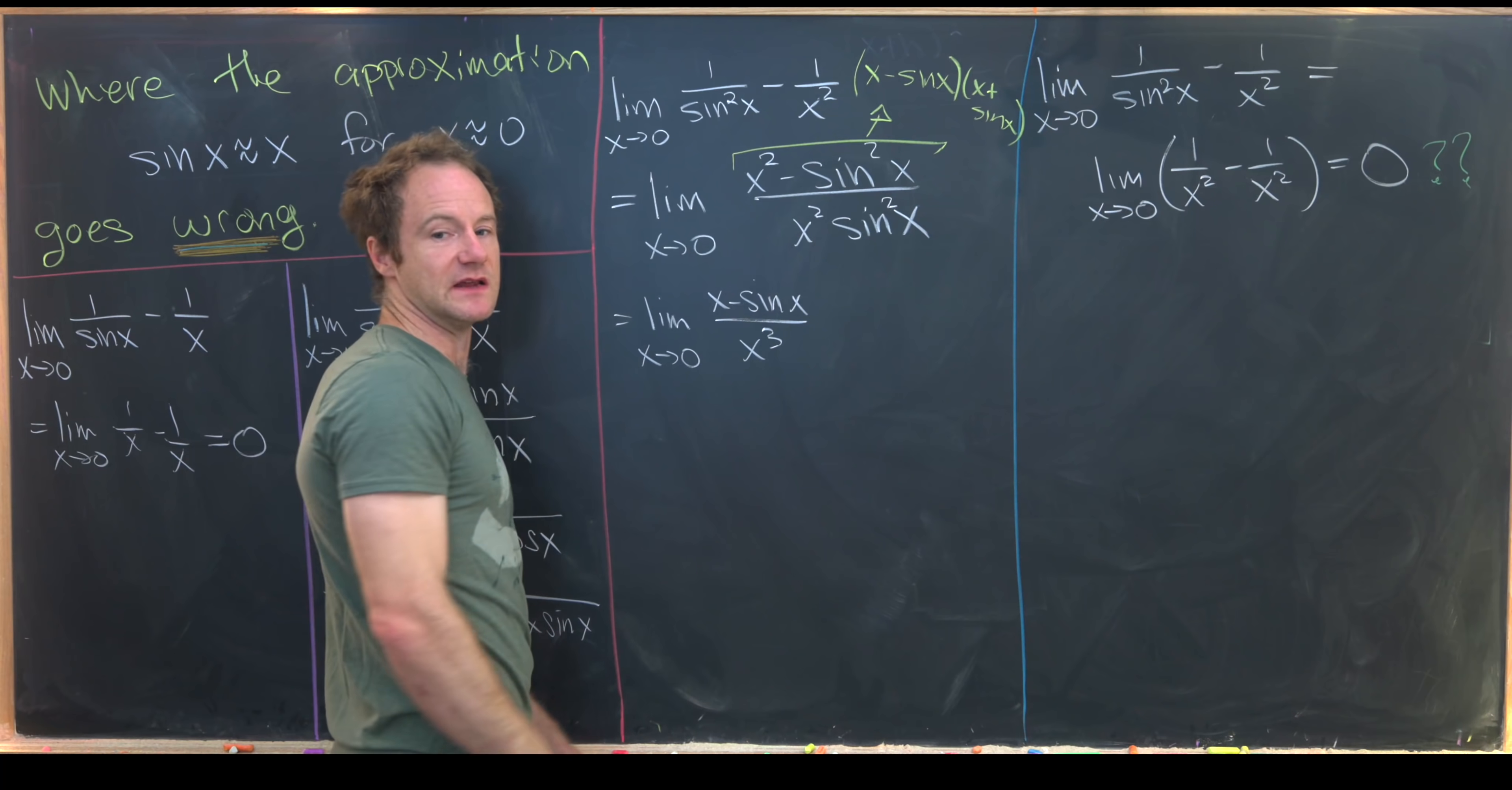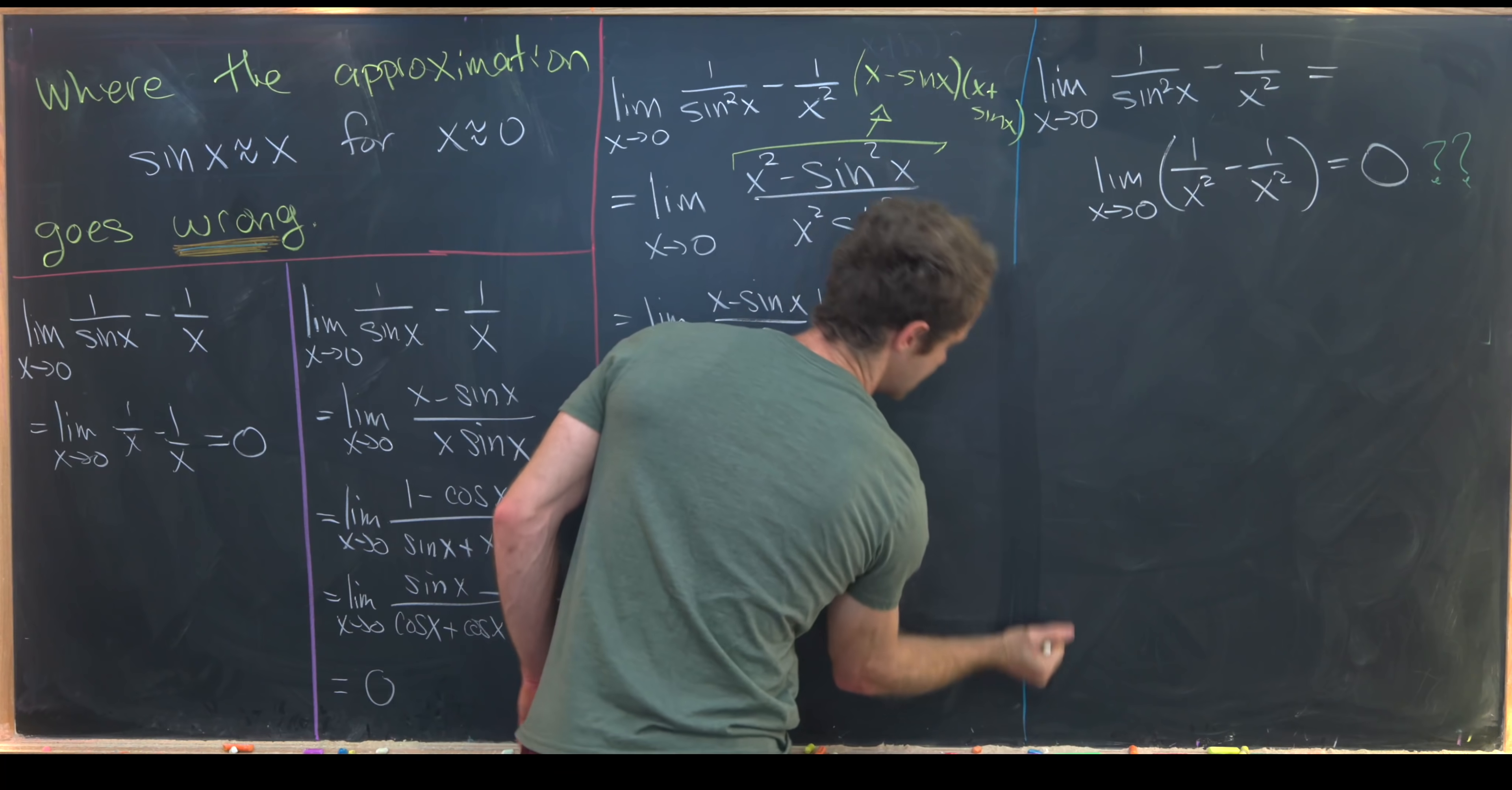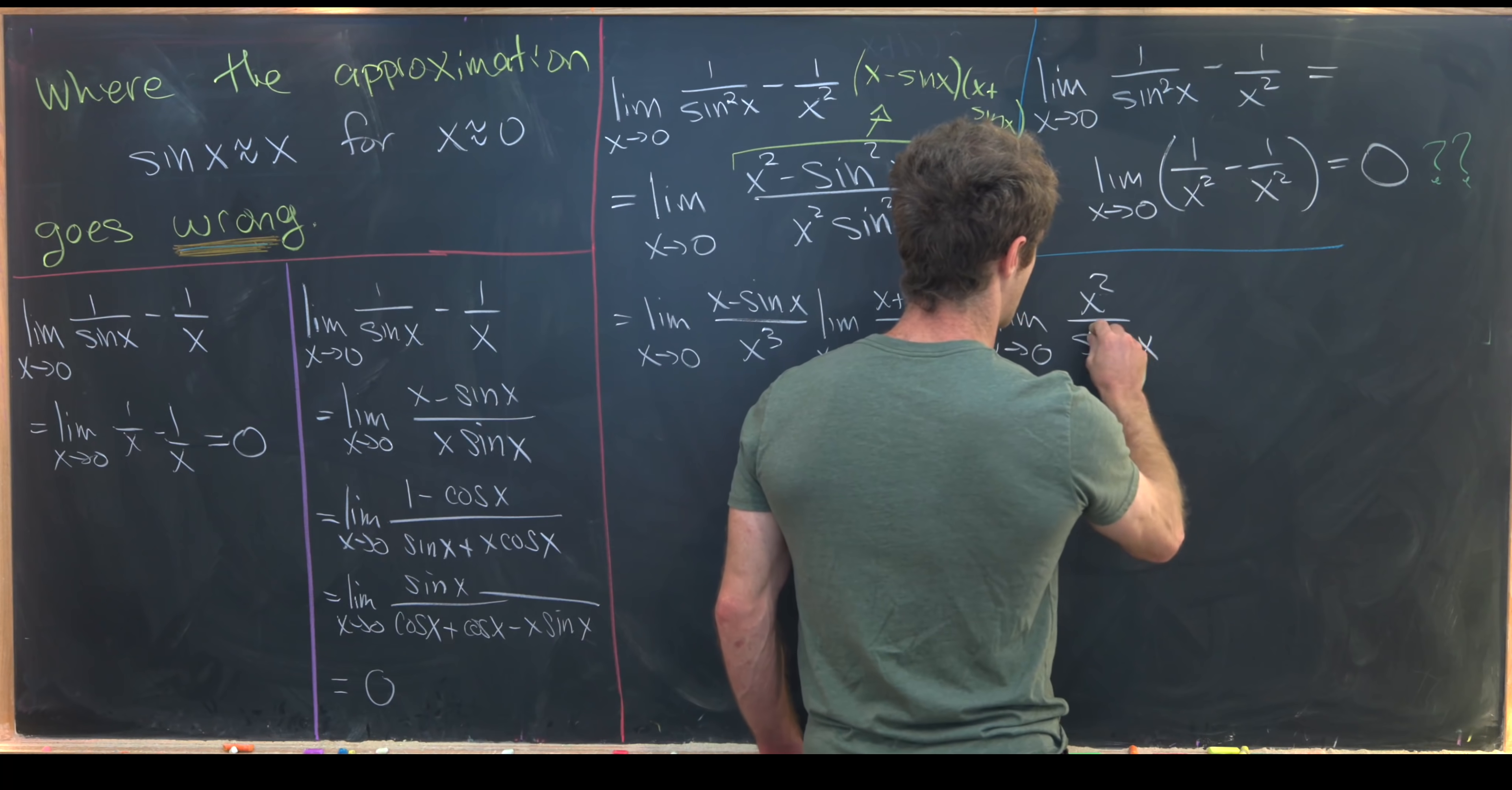And then that's going to be multiplied by the limit as x goes to zero of x plus sine of x over x. So let's maybe extend this because we don't really need the room for the other version. And then times this limit as x goes to zero of x squared over sine squared x.